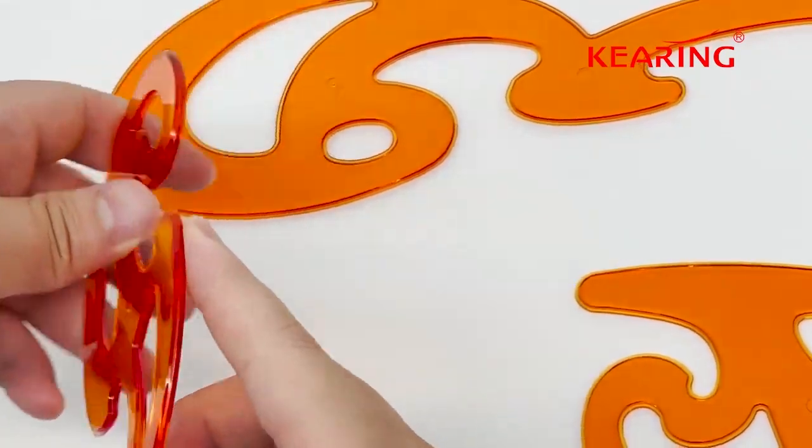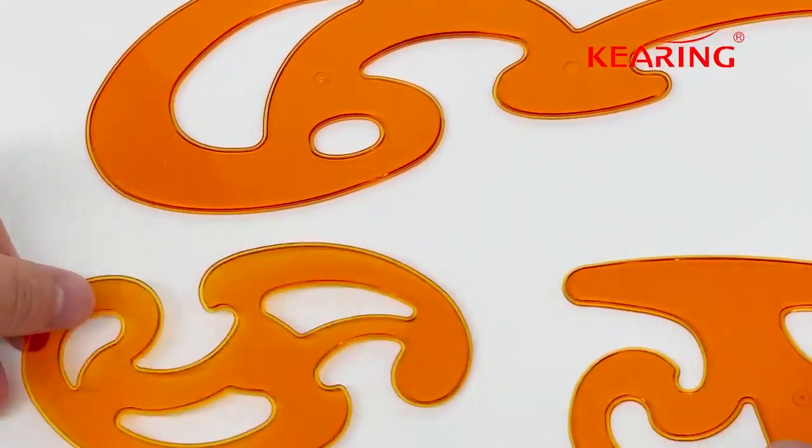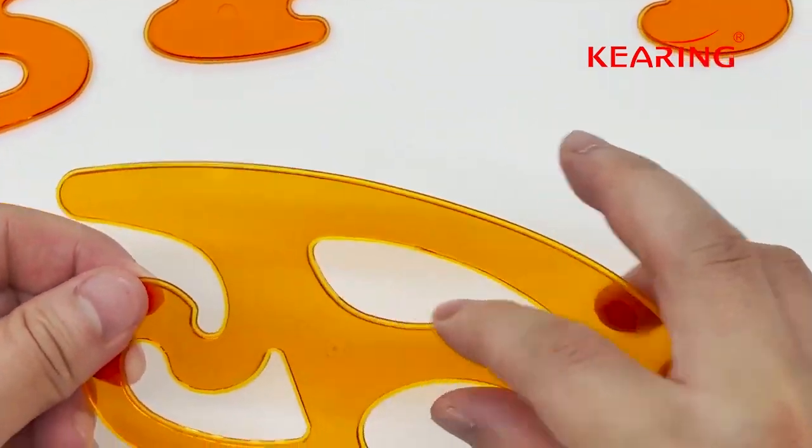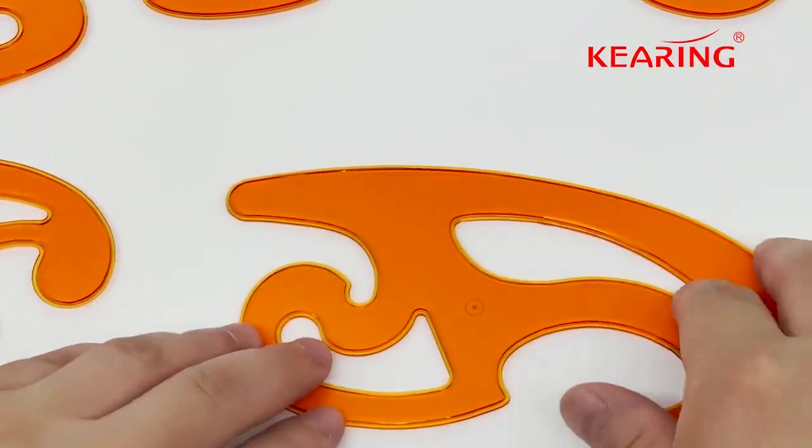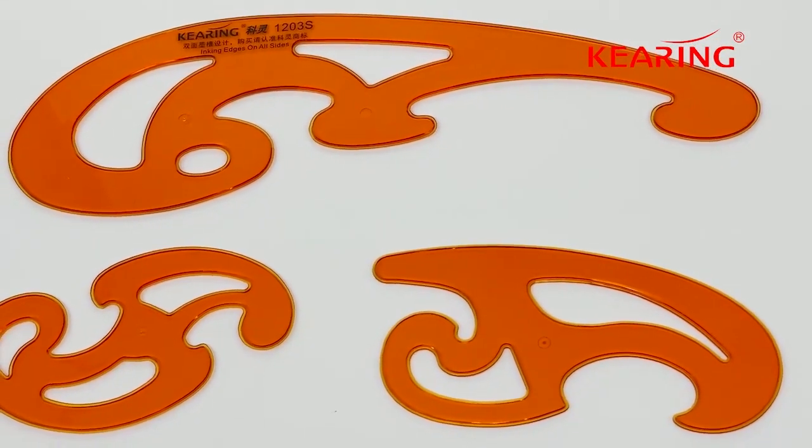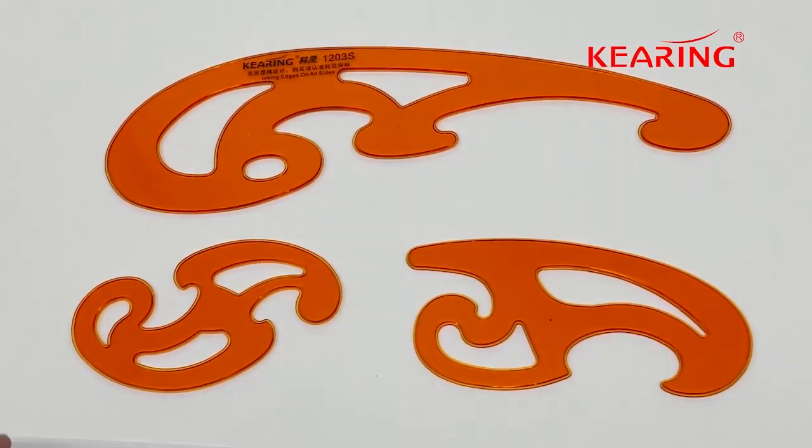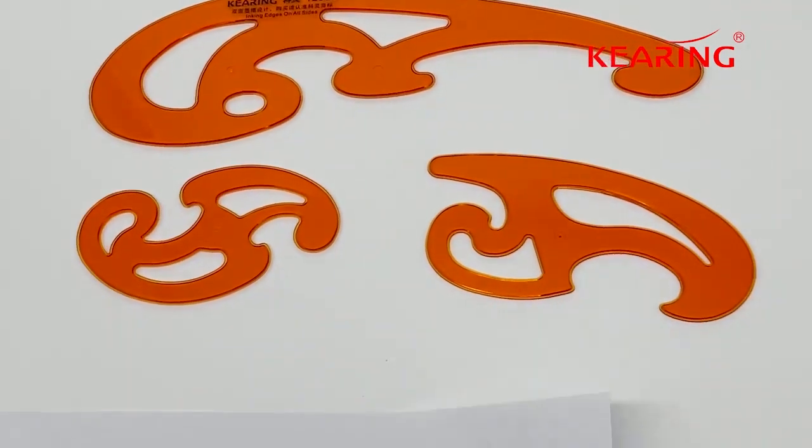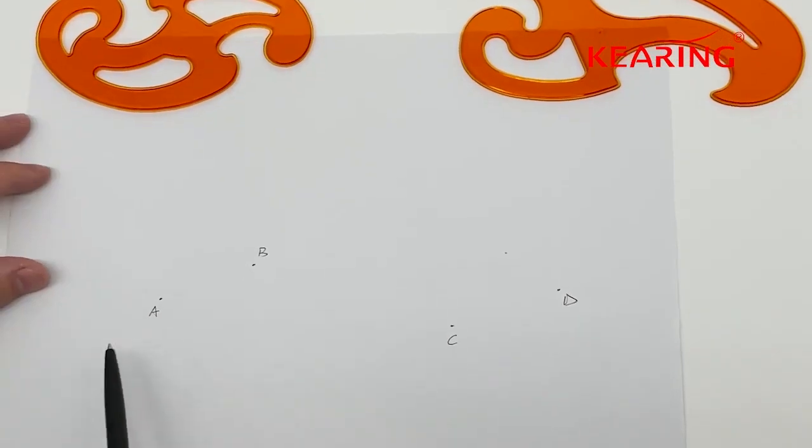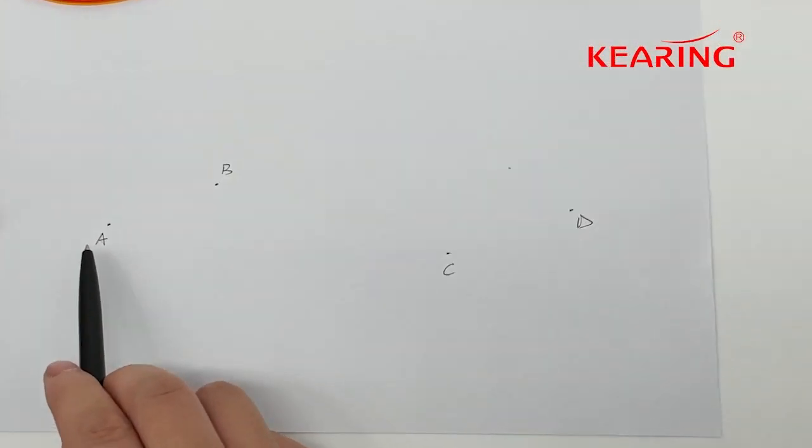It also has an inking edge everywhere. Here we'll show you how to use it. For example, if we want to join a curve line on paper with four points A, B, C, and D.